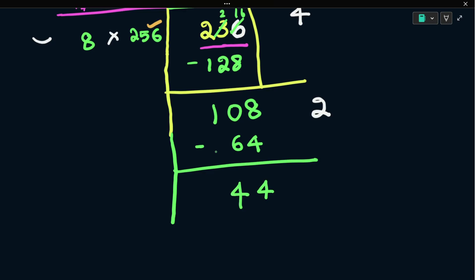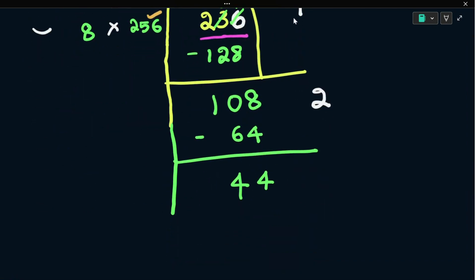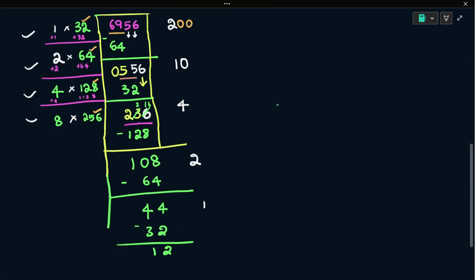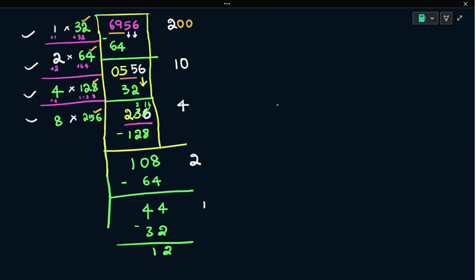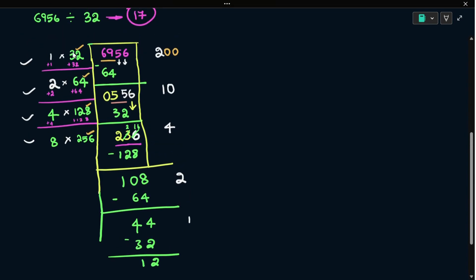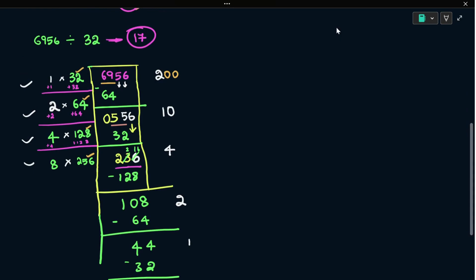We are now 44. So 1 is 32. 44 minus 32 is 12. 4 minus 2 is 2, 4 minus 3 is 1. We get 12. 12 is the lowest — 12 is less than 32, so you can stop because there is no number to carry down. So 12 is stop. You can write the right-side numbers and circle them.